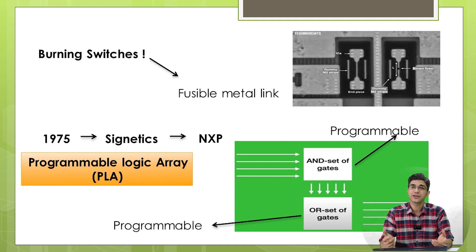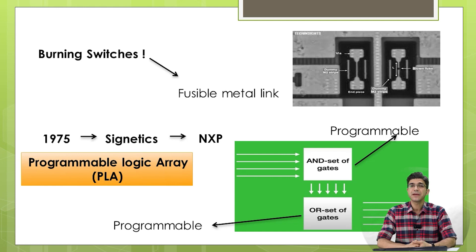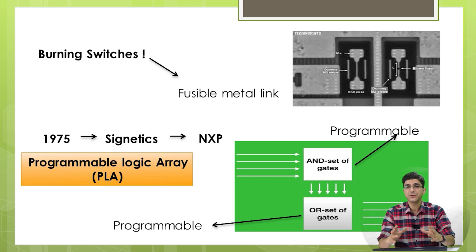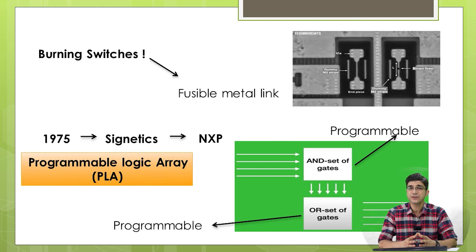In 1975, a company called Signetics — now known as NXP, one of the most famous semiconductor companies — created the PLA, or Programmable Logic Array. This was a significant advancement in FPGA. They made the network between both the OR gates and the AND gates programmable. However, this technology still had problems: it was very slow and also very costly.